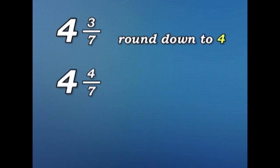Four and three sevenths. Well, three sevenths is less than a half. So, we round down to four. Four and four sevenths. Four sevenths is more than a half. So, we round up to five.